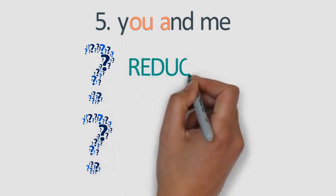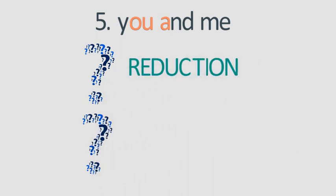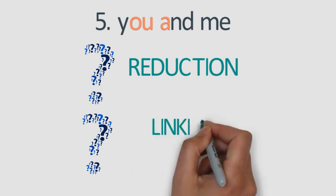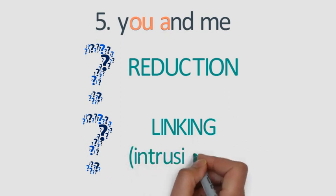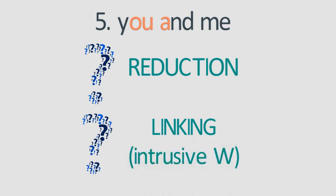That's right. First, we have reduction of 'and' to 'und,' since it's a function word and is unstressed. And secondly, a case of linking between 'you' and the word 'and' — an intrusive W sound that we have here. 'You and me,' 'you and me.'